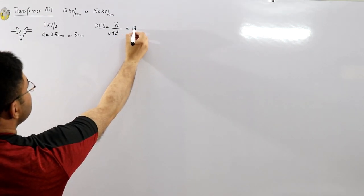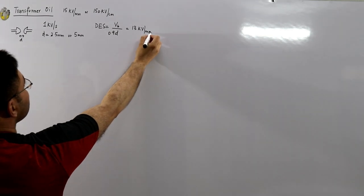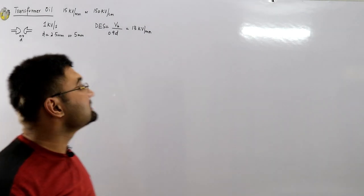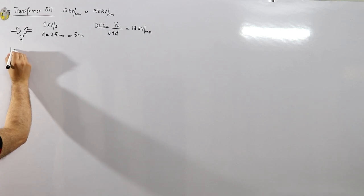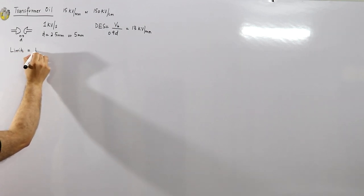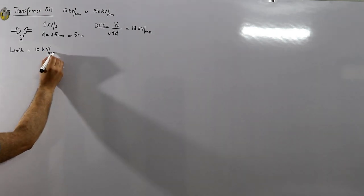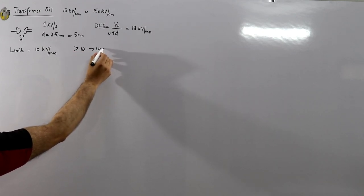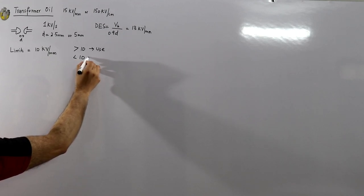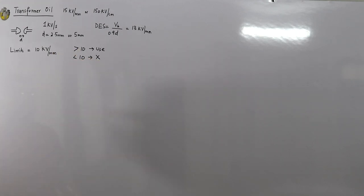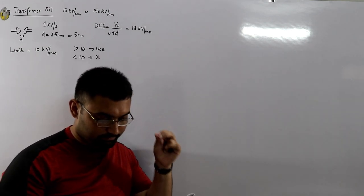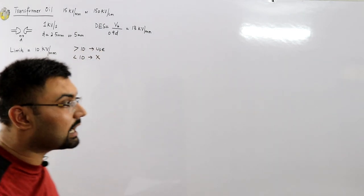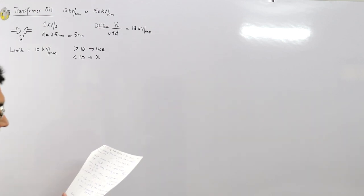Let's say you get a dielectric strength of 13 kV/mm. The threshold limit is 10 kV/mm. If the dielectric strength is greater than 10 kV/mm you can still use it, and you can even enhance it a little. If it is less than 10 kV/mm, you must discard it.